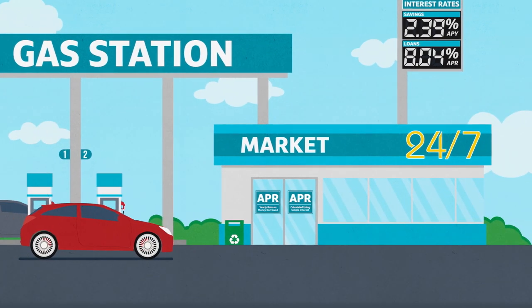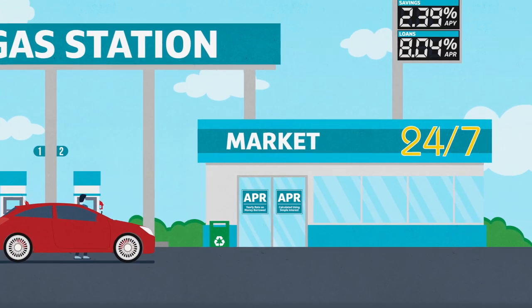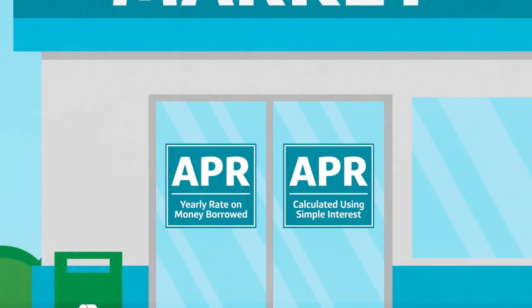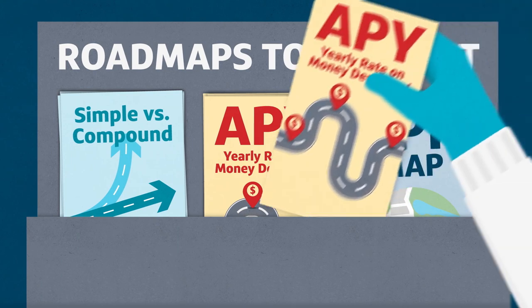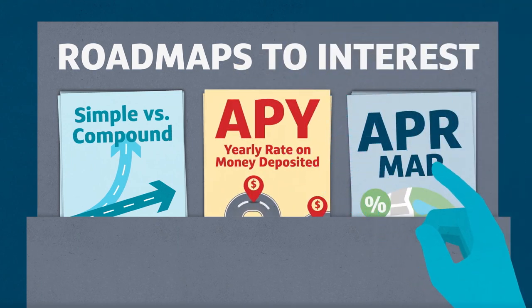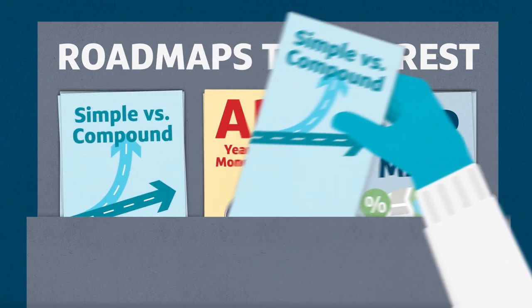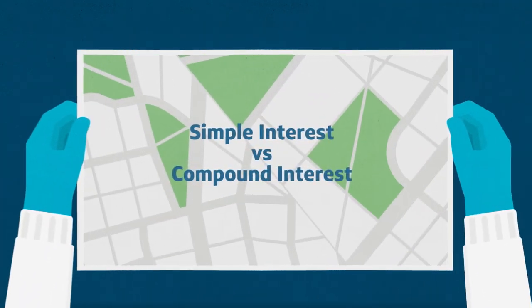So how does APR work? APR, or your annual percentage rate, is your yearly rate on money borrowed calculated using simple interest. APY, or annual percentage yield, on the other hand, is your yearly rate on money deposited calculated using compound or simple interest.